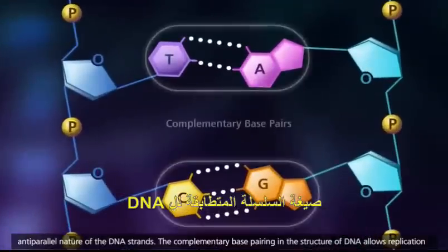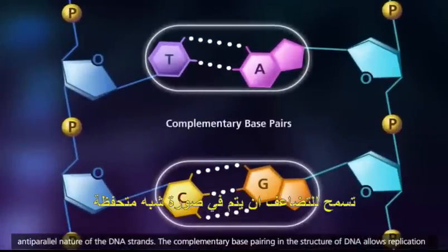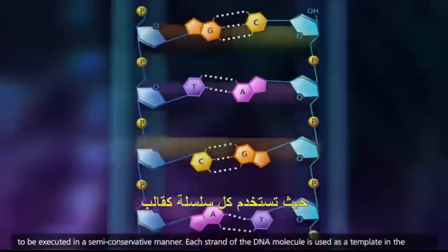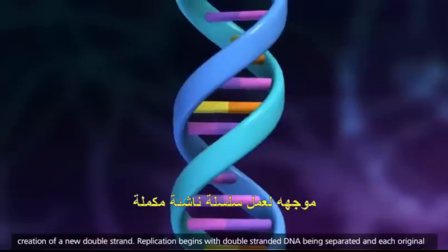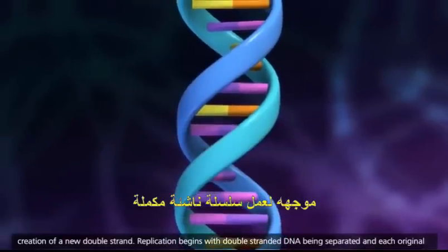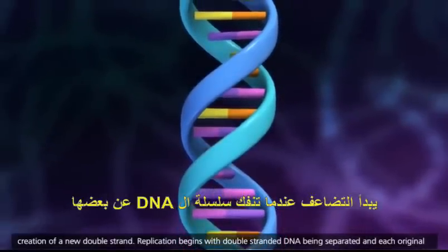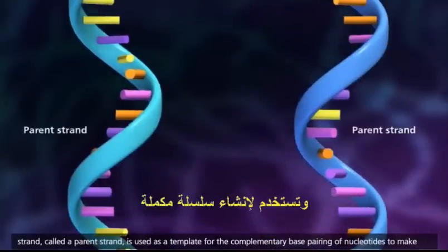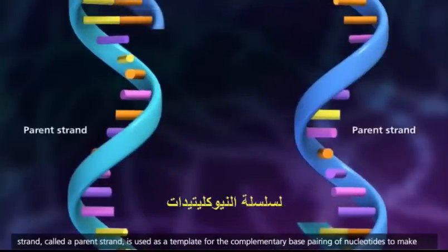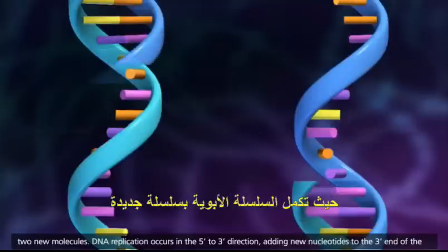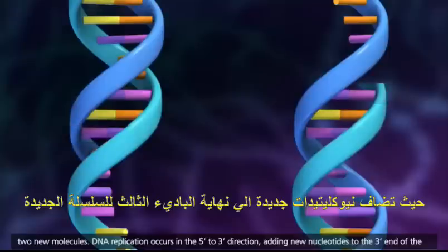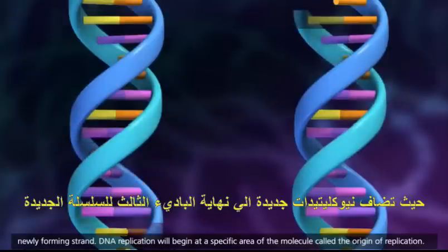The complementary base pairing in the structure of DNA allows replication to be executed in a semi-conservative manner. Each strand of the DNA molecule is used as a template in the creation of a new double strand. Replication begins with double-stranded DNA being separated, and each original strand, called a parent strand, is used as a template for the complementary base pairing of nucleotides to make two new molecules. DNA replication occurs in the 5' to 3' direction, adding new nucleotides to the 3' end of the newly forming strand.